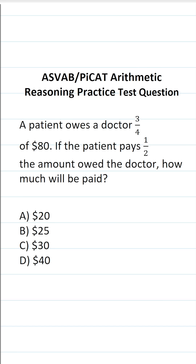So let's start with this part right here. The patient owes the doctor three-fourths of $80, so we're going to do three-fourths times 80. To make this math a little bit easier to do, I can write 80 as a fraction by placing it over one. 80 divided by one is just 80. In doing so, this enables me to cross-reduce.